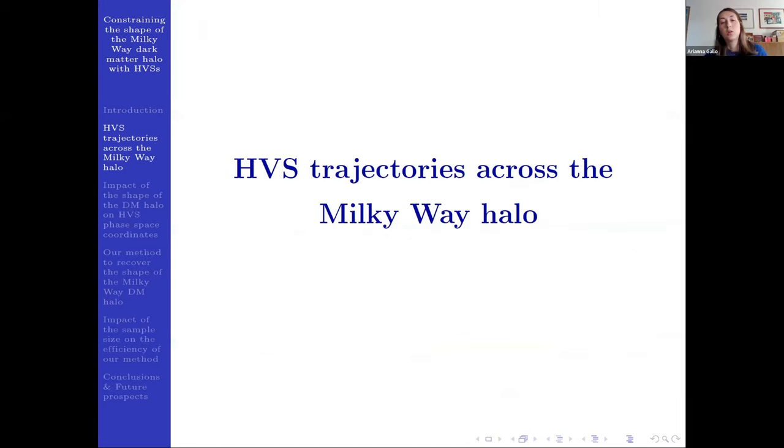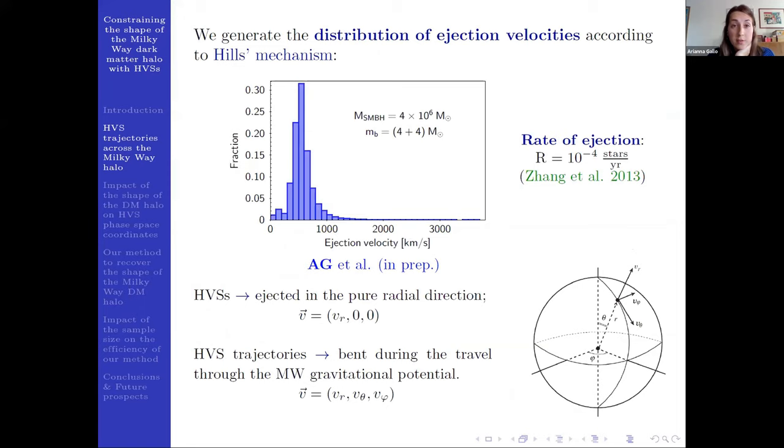To do so, we develop a code that integrates HVS trajectories across the Milky Way halo. We first generate a distribution of ejection velocity according to its mechanism. And the figure shows our results for the chosen parameters in our simulation. The hypervelocity star is ejected in a pure radial direction.